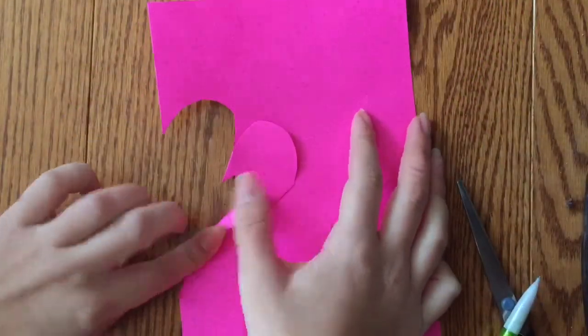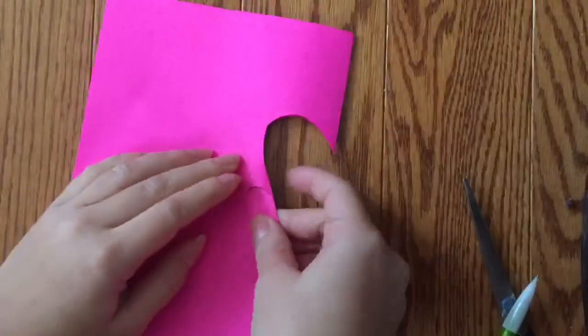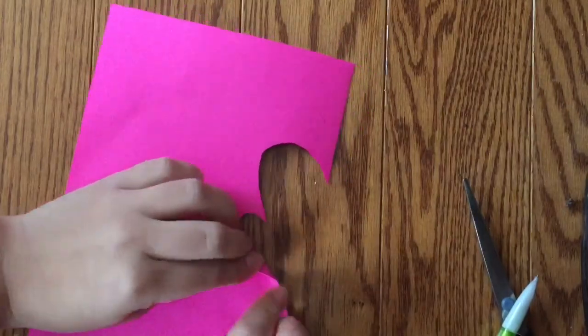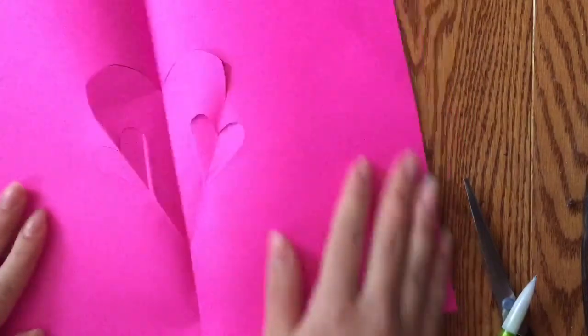Now, just fold the mini heart on one side of the paper and on the other. When you open the paper, it should look like this.